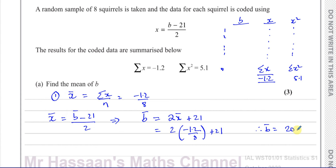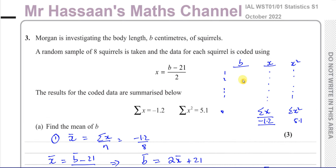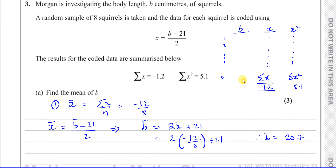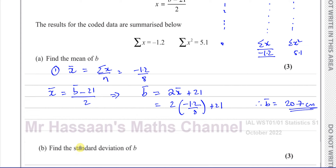So the mean of the actual values is 20.7 centimetres. That's the answer for part A. Now we move to part B, which says: find the standard deviation of b.